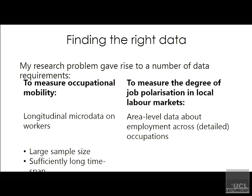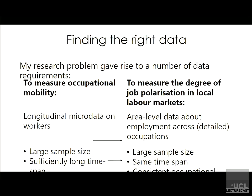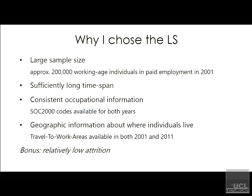For the area-level data I needed similar criteria: a relatively large sample size, because you need to have a sufficient number of observations within each area. It also needs to go over the same time span as the other dataset. You also need occupational information, and the information needs to be available at the same geographical areas. So why did I choose the LS for the occupational mobility part of the research?